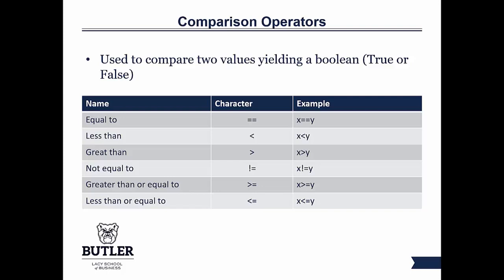So the way that you express a comparison operator in Python is slightly different from Excel. When you work with Excel and you want to say something like X is equal to Y, you would just do X equals Y. But when you're working in Python, you can't do that because using a regular equals key — just one equal sign — is how you declare a variable. So if you're trying to use the equals comparison operator, instead of a single equals you use two equal signs right next to each other. So X == Y means X equals Y.